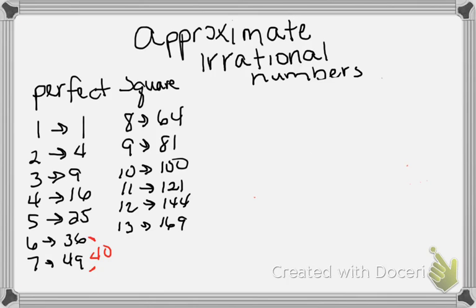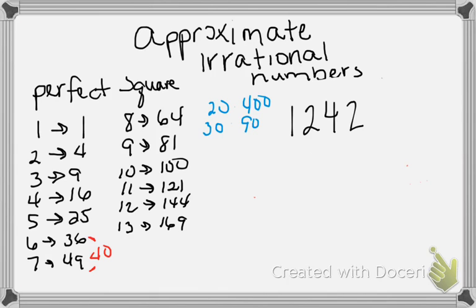Let's try a bigger number: √1242. I don't know offhand if this is a perfect square. Looking at our chart extended: 20×20=400, 30×30=900, 40×40=1600. Since 1242 falls between 900 and 1600, we know our answer is between 30 and 40.